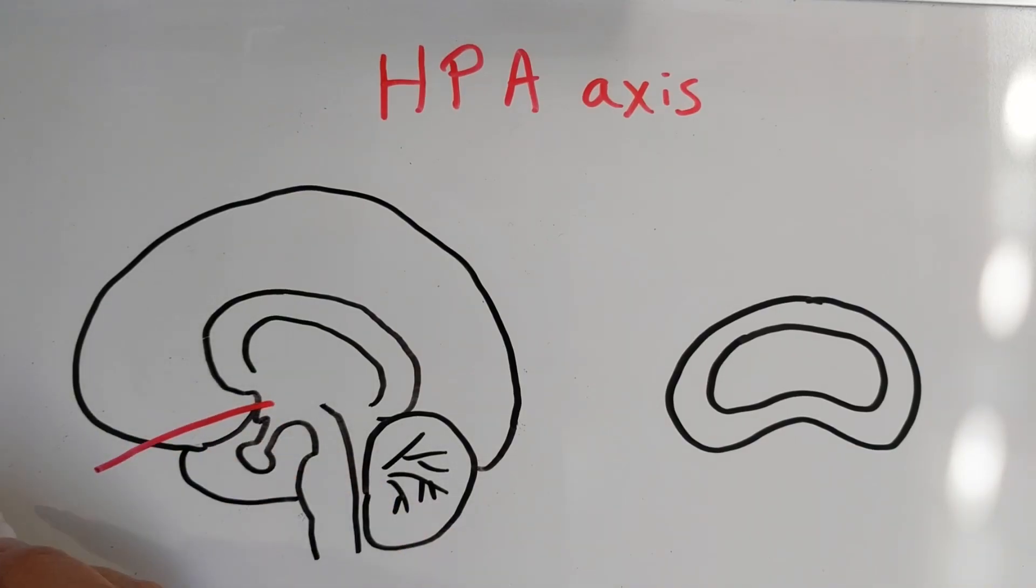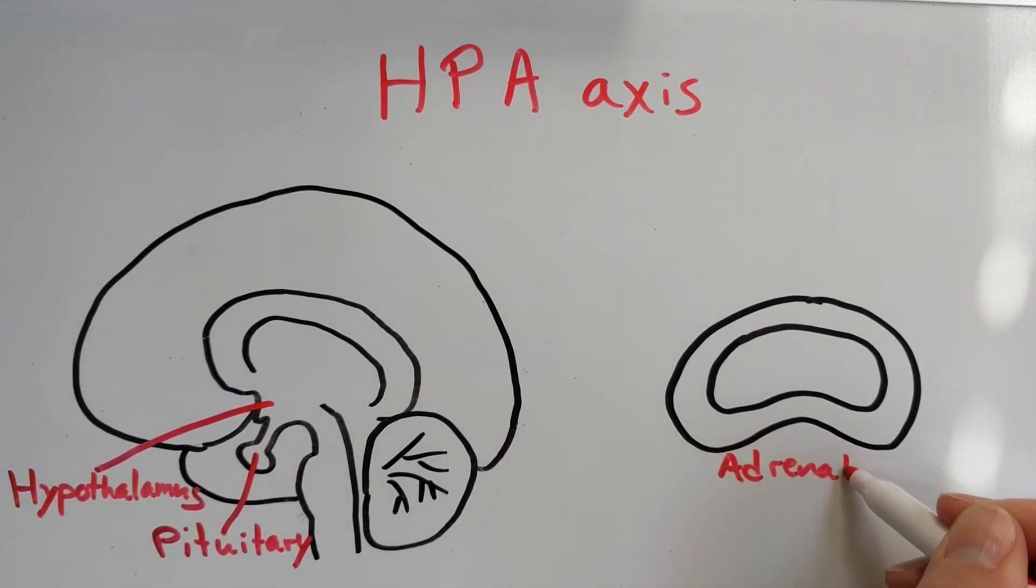The release of cortisol occurs via the HPA axis, which is the hypothalamus and pituitary gland in the brain, and the adrenal gland located just above the kidney.